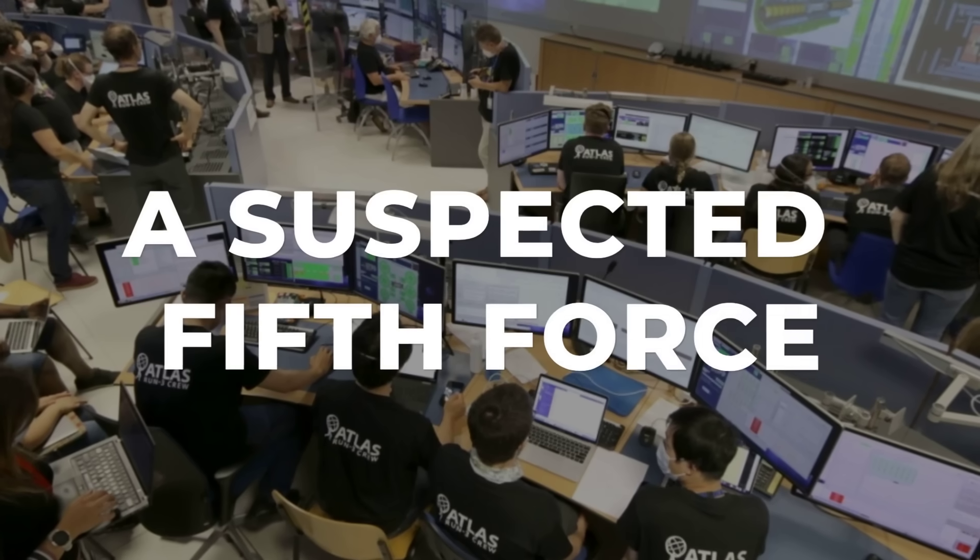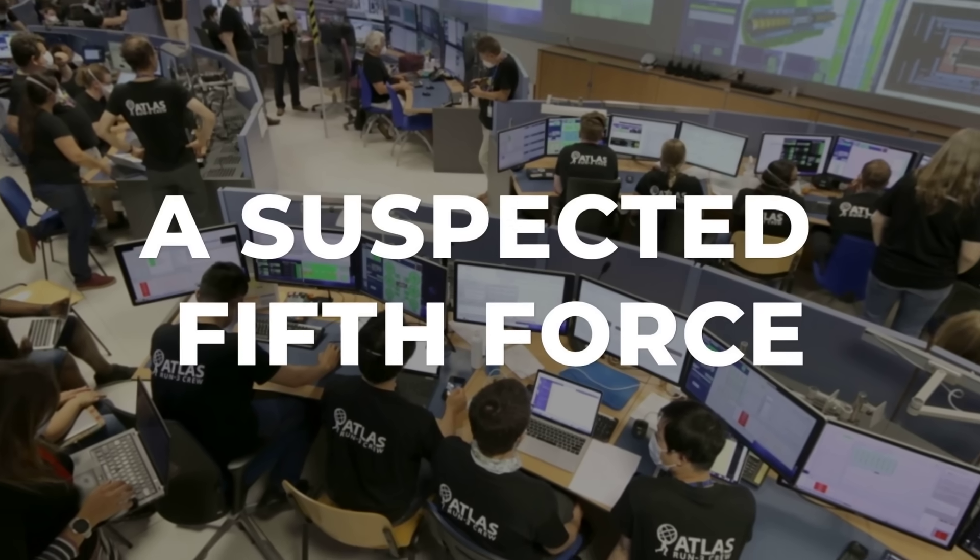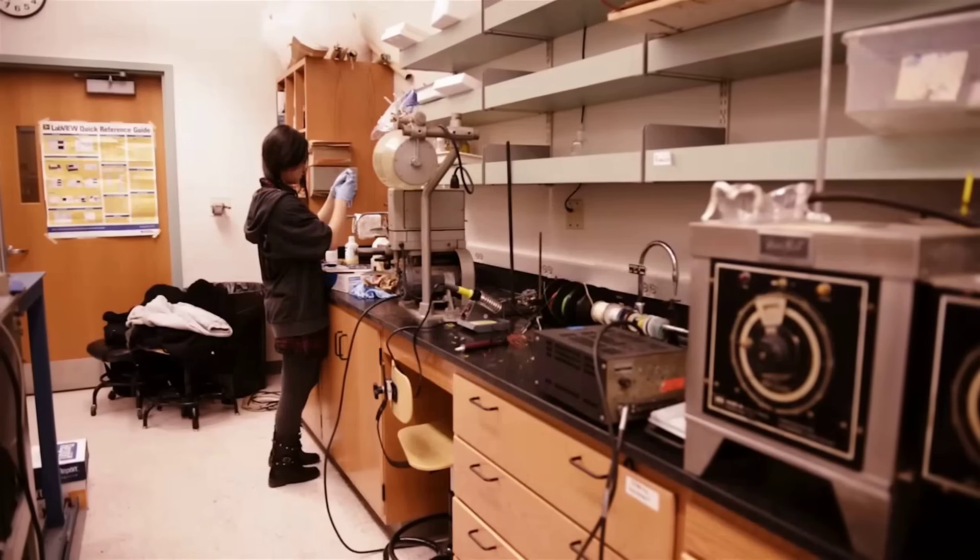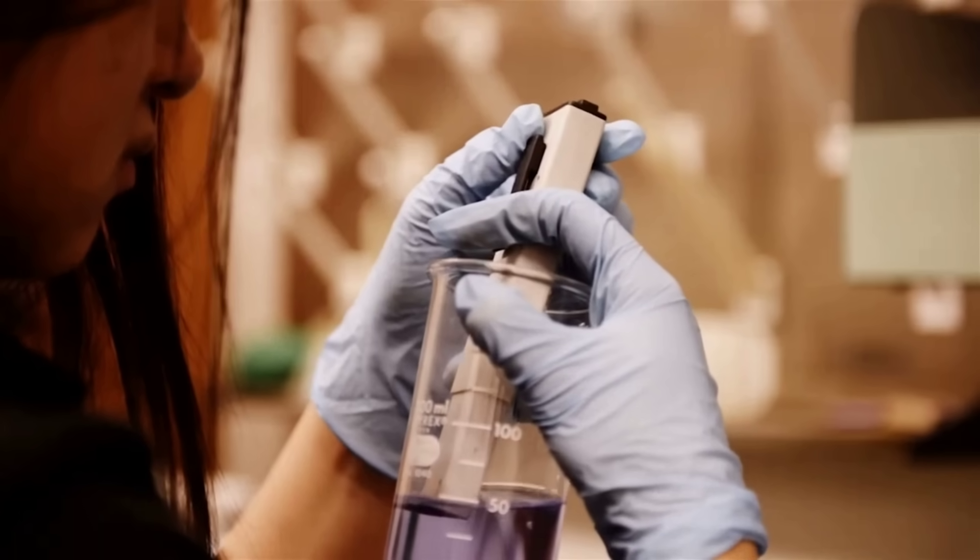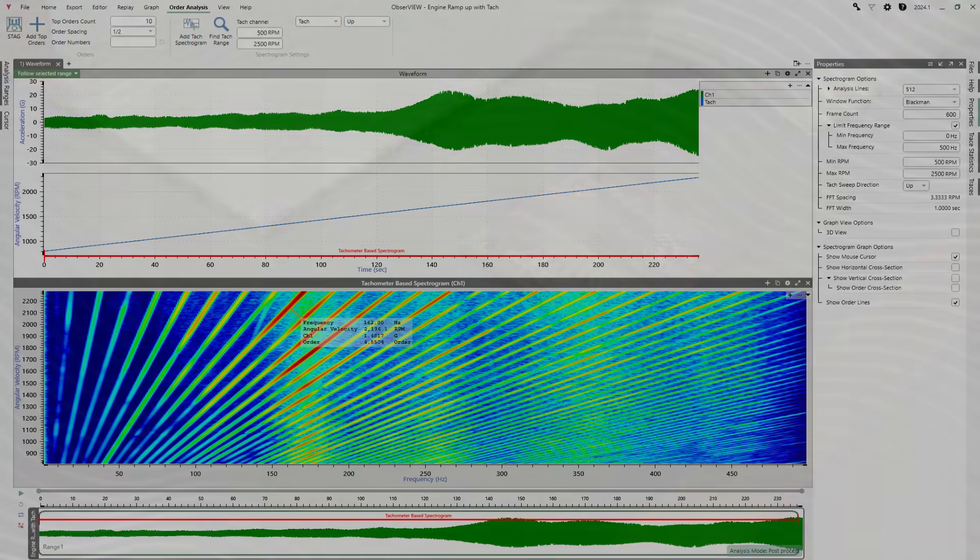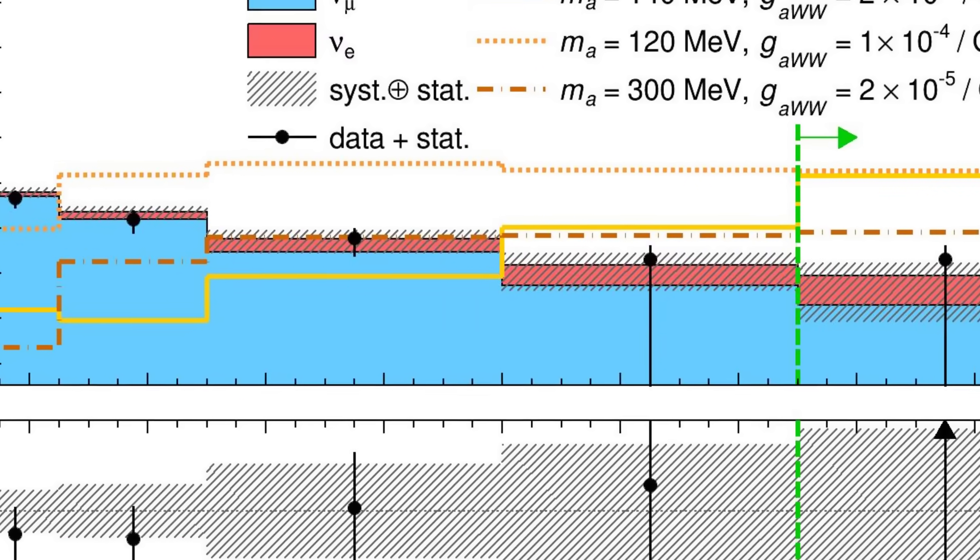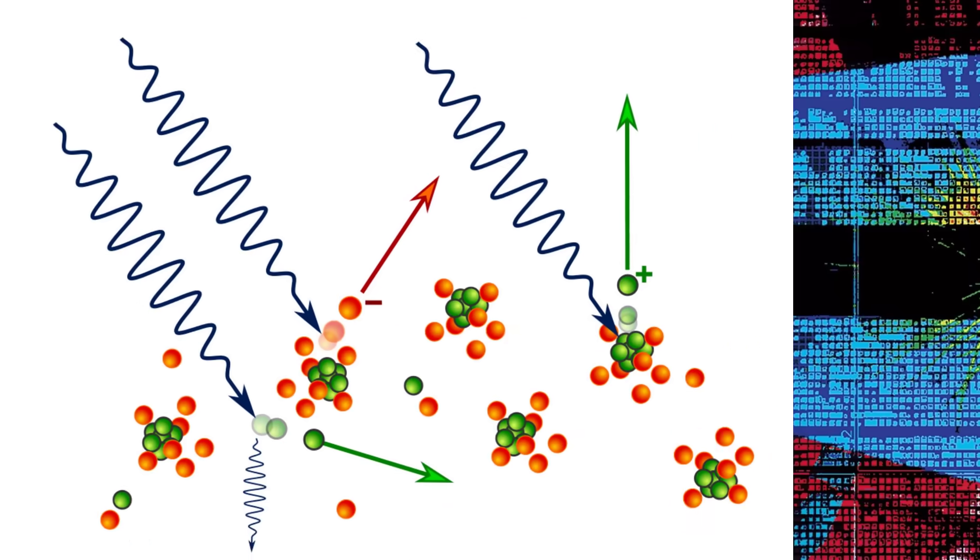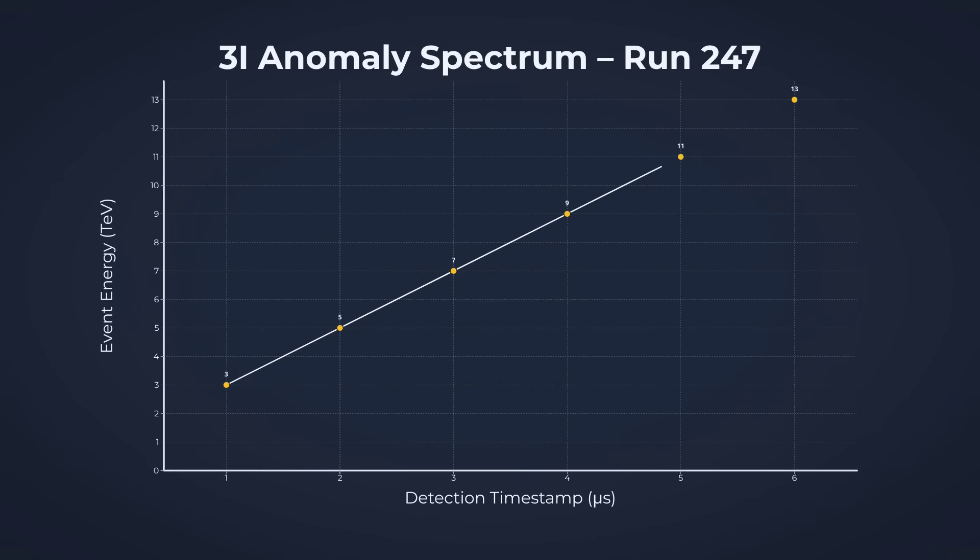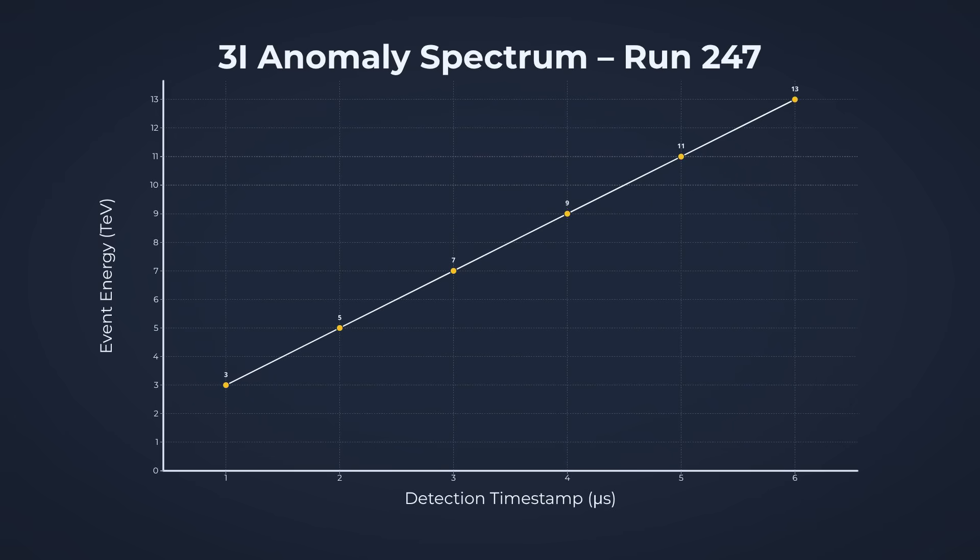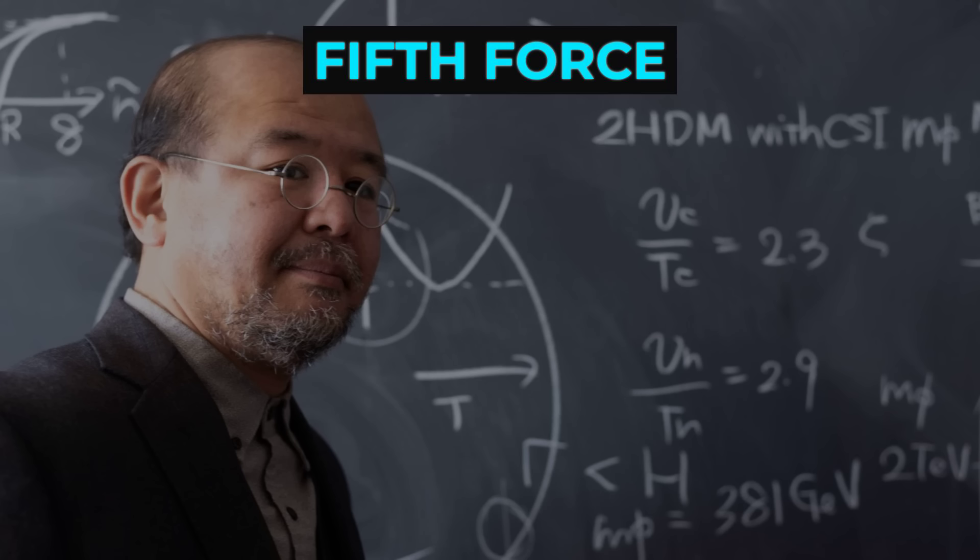Physicists began mapping the anomaly against the known forces of nature: gravity, electromagnetism, the strong and weak nuclear forces. Each has its own signature, its own rules. But the 3i pulse didn't fit. It didn't behave like a stray photon or a rogue gluon. Its energy profile, its fleeting presence, and its refusal to decay into anything familiar left theorists with a stark possibility: a fifth force lurking in the data.